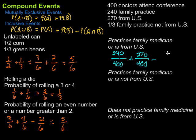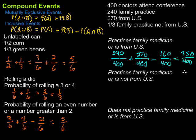So: 240 plus 270 minus 160 equals 350 out of 400. Simplifying by dividing top and bottom by 50 gives us 7 over 8. That's the probability that a doctor practices family medicine or is from the U.S.